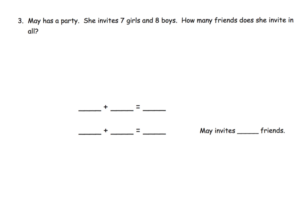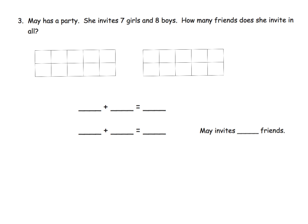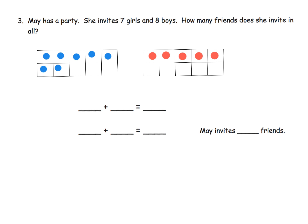Here we have: May has a party and she invites seven girls and eight boys — how many friends does she invite in all? Before I model this I'm going to bring in some 10 frames, because that's how I've been modifying this lesson. She invites seven girls, so let's model seven: one, two, three, four, five, six, seven. Now we're going to model eight boys: one, two, three, four, five, six, seven, eight. We've modeled the question — seven girls, eight boys.